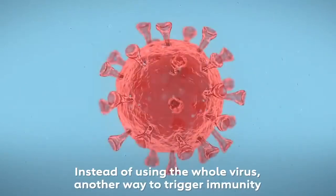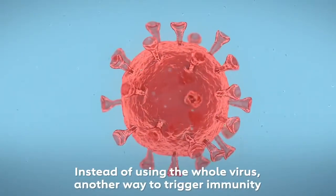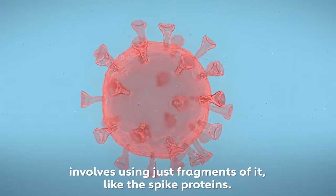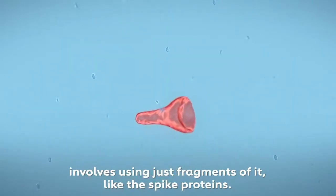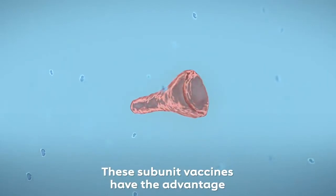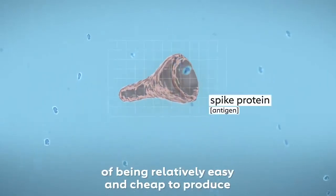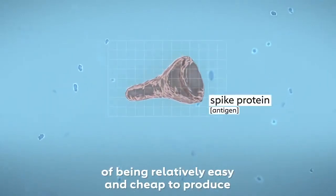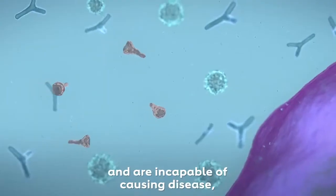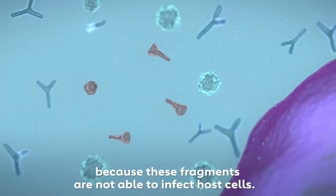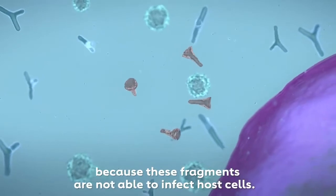Instead of using the whole virus, another way to trigger immunity involves using just fragments of it, like the spike proteins. These subunit vaccines have the advantage of being relatively easy and cheap to produce and are incapable of causing disease because these fragments are not able to infect host cells.